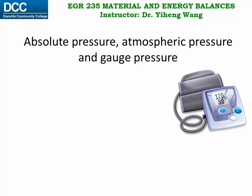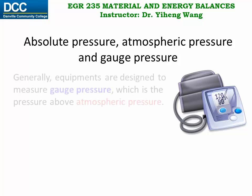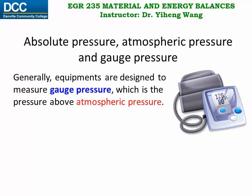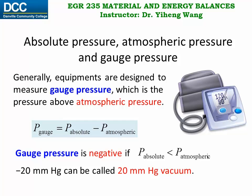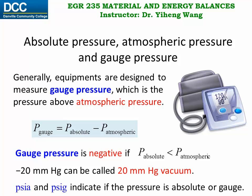Since atmospheric pressure exists everywhere, many equipment such as the tire pressure gauge, blood pressure measuring device, and many pressure gauges used in industry are designed to measure gauge pressure, which is the pressure above atmospheric pressure. Gauge pressure equals absolute pressure minus atmospheric pressure. If the absolute pressure is lower than atmospheric pressure, gauge pressure is negative. For example, negative 20 mmHg gauge pressure can be called 20 mmHg vacuum. In the American engineering unit system, units like PSI-A and PSI-G are used to indicate if the pressure is absolute or gauge.